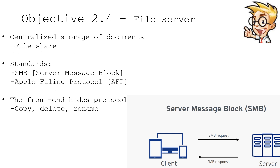Now that you can connect to the network, you can also store files on a file server. This is a centralized storage device, usually with a set of folders that you can use to store all of your information. Because these are stored on the network, you can log in from any device and have access to your personal files. If you're in Windows you're probably using SMB, or Server Message Block. If you're in macOS you're probably using AFP, or the Apple Filing Protocol. From a user's perspective, they just see some folders and when they click on them they can copy, delete, and rename them just like any file on their local computer.